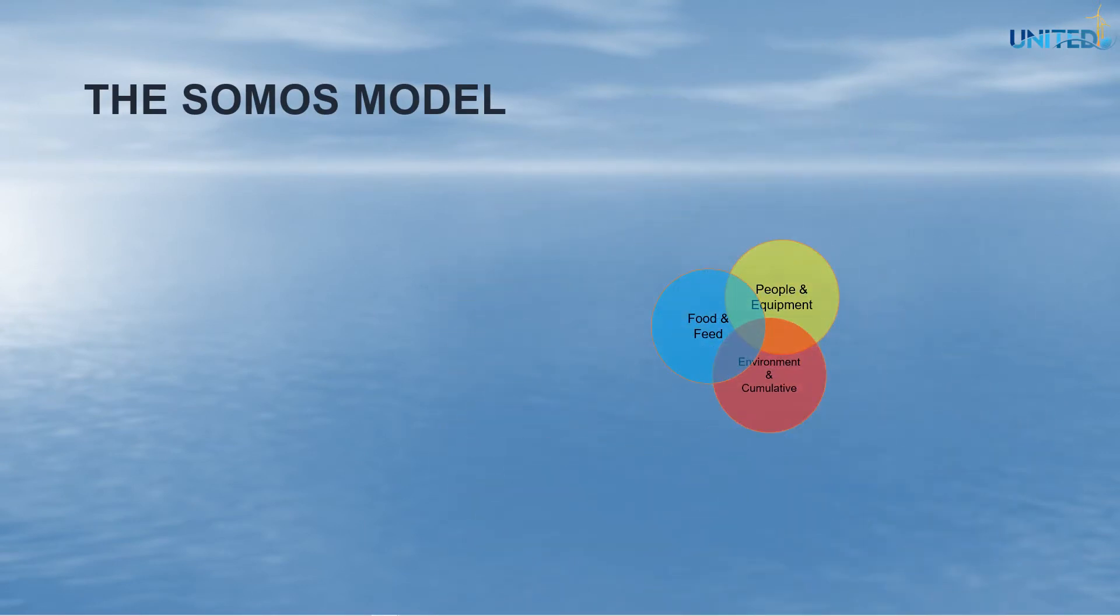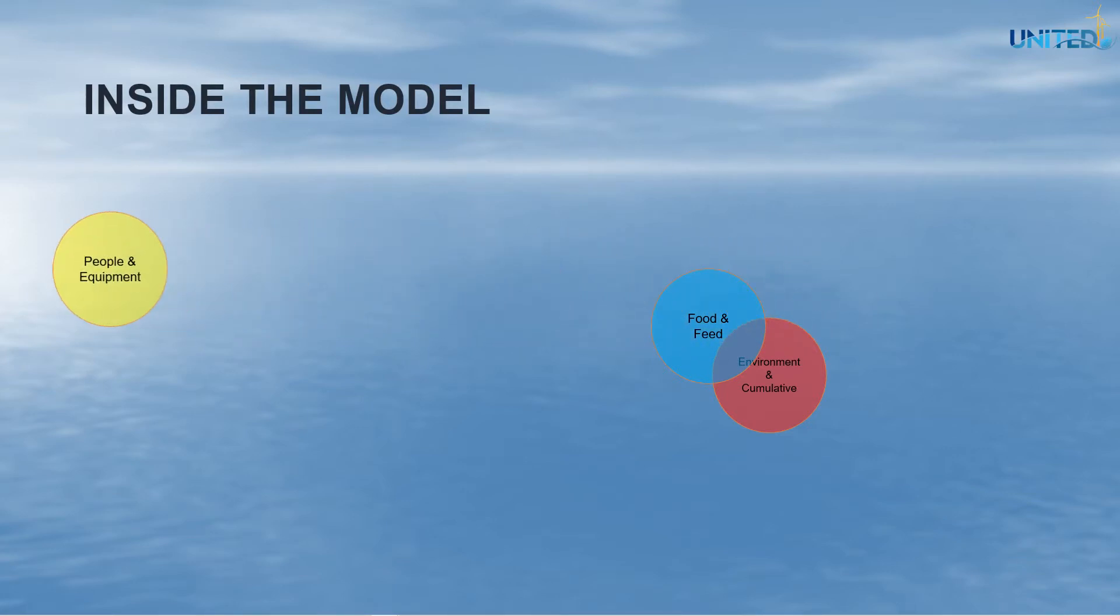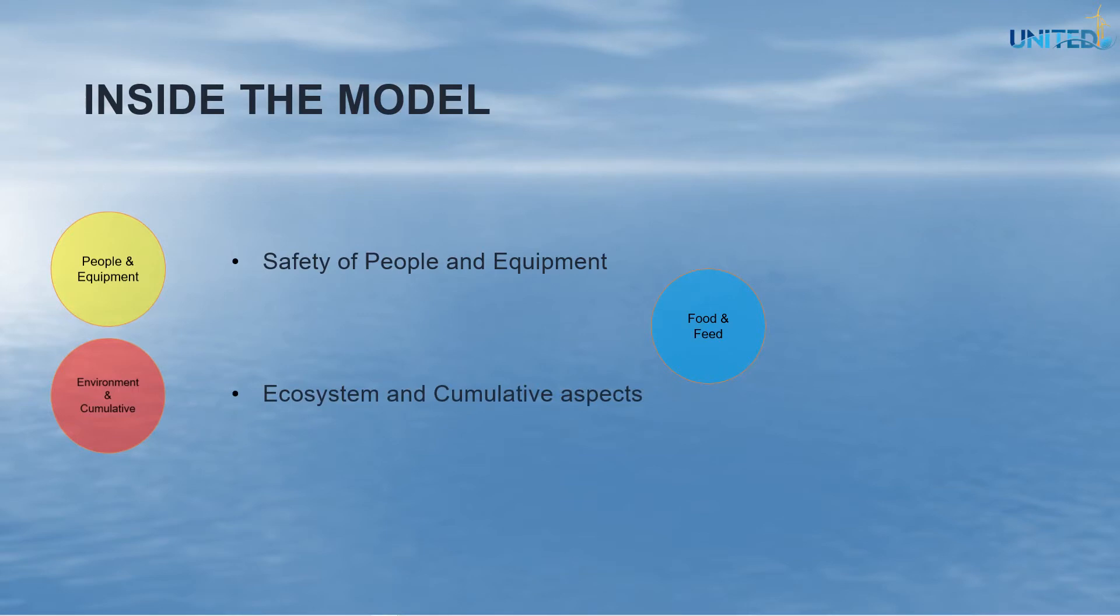At the core of the SOMOS model lie three views on safety: safety of people and equipment, ecosystem and cumulative aspects, and safety of each of the individual production processes, for example food safety when producing seaweed.